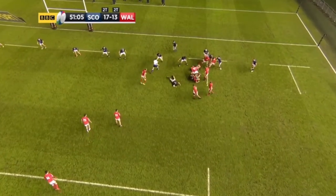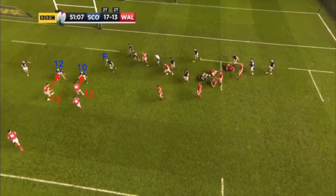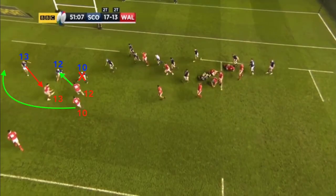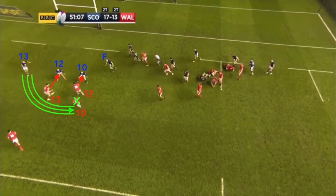As the move progresses, Hallaholo does an excellent job at taking the ball to the line, which combined with the incredibly effective overs line of Watkin legally tying in the defensive 12 Lang, prevents the defensive 12 from covering two players by swimming off from defending the overs line to sack the unders running 10 Sheedy. However, as a result of the failure of the initial playoff 12 shape — causing this move to essentially be just a narrow unders and overs — the defensive 13 Harris now has a free lane to move forward in an attempt to sack Sheedy behind the advantage line.